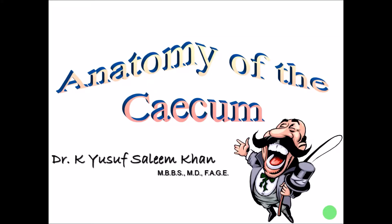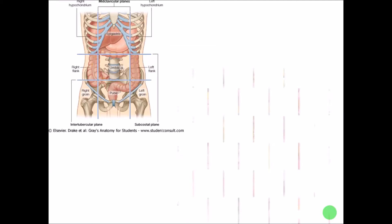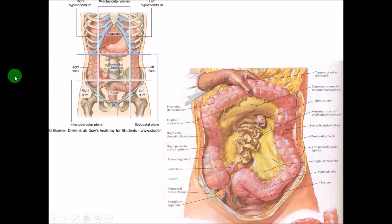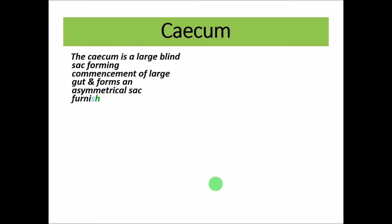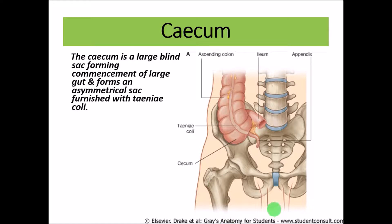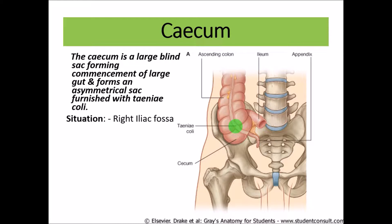Hi friends, in this video we will try to revise the anatomy of the cecum. The cecum is a large blind sac forming the commencement of the large gut and forms an asymmetric sac furnished with taenia coli. This asymmetric sac indicates the commencement of the large intestine and it has taenia coli just like any other part of the large intestine.